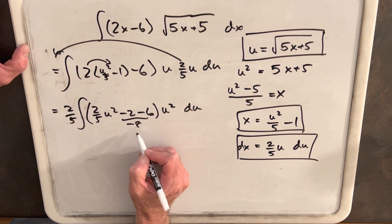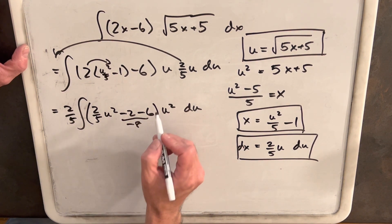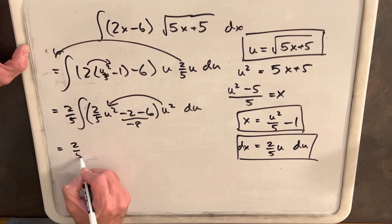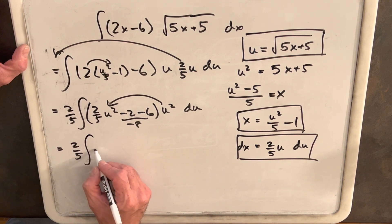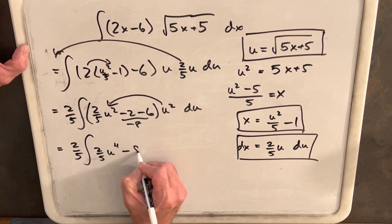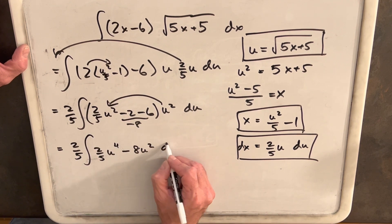Okay, this is just minus 8. I need to distribute this back. Okay, so then let's rewrite this. We're going to have 2 fifths up front. Integral 2 fifths u to the 4th, doing this distribution, minus 8u squared du.